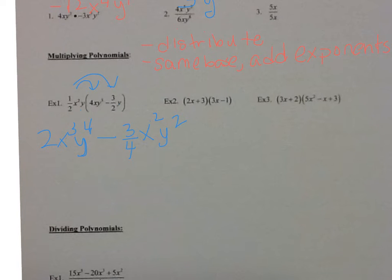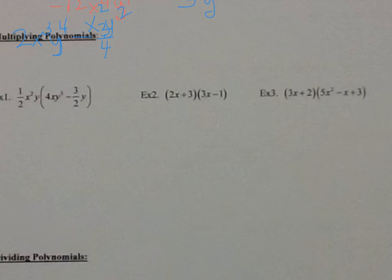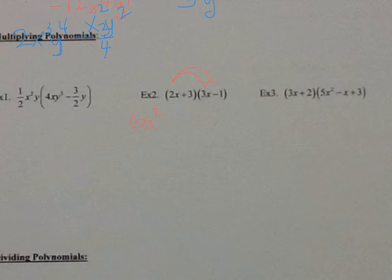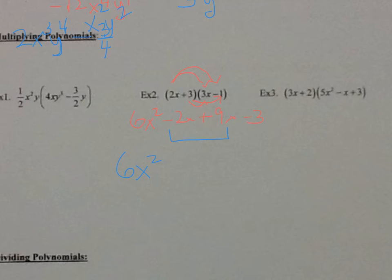For number 2, we are multiplying two binomials together. With binomials I like to just double distribute. So I'm going to multiply 2x times 3x and get 6x squared. Then 2x times negative 1 gives negative 2x. Then 3 times 3x is positive 9x. And 3 times negative 1 is negative 3. Then remember to combine like terms: 6x squared, negative 2x plus 9x is positive 7x, and then minus 3.